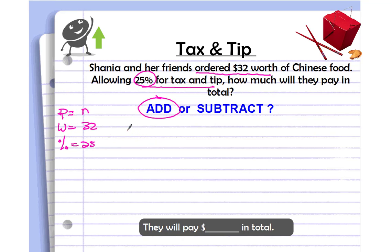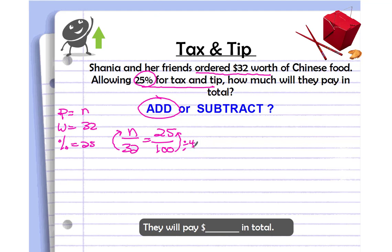Starting with the percent proportion: part over whole equals percent over 100. Going vertically, from 100 to 25 I'm getting smaller, so I divide by 4. 100 divided by 4 gives me 25, so I use the same scale factor on the other side: 32 divided by 4 gives me 8. So the tax and tip part is $8. Now I just add the $32 whole amount plus $8, and I get a total cost of $40. They will pay $40 in total.